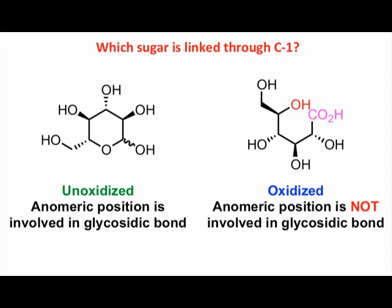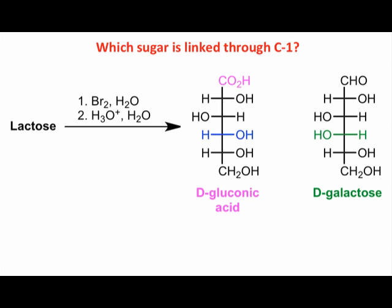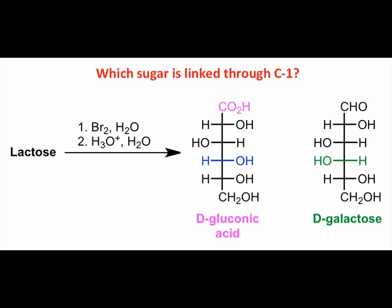The unoxidized sugar, we can be sure, was linked through its anomeric position. In practice, mild oxidation of lactose followed by acidic hydrolysis yields oxidized glucose, or gluconic acid, and pristine galactose. This tells us that galactose must be linked through its anomeric position.